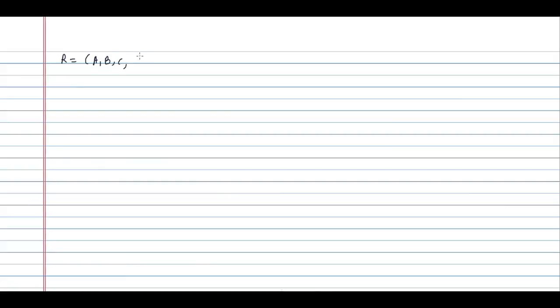The next question: we have the following relation with attributes A, B, C, D, E, H. The functional dependencies given are: A determines B; B and C together determine D; E determines C; and D determines A.